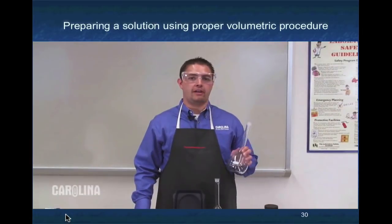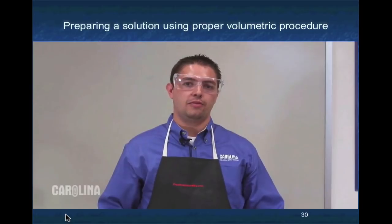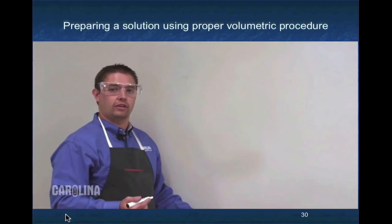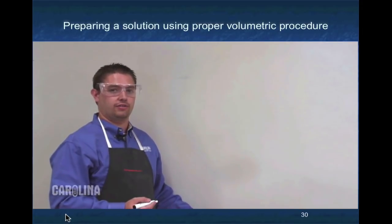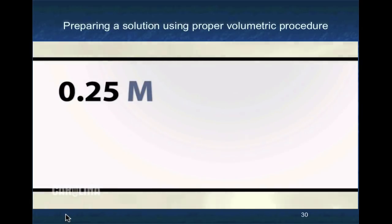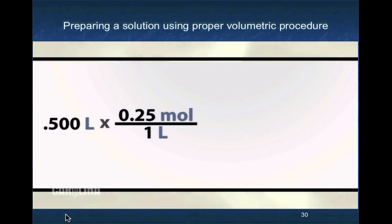Today, we will be preparing 500 milliliters of a 0.25 molar sodium chloride solution. Before beginning, it's important to map out your procedure for preparing this solution. We know that we want to prepare a 0.25 molar solution, which means that there is 0.25 moles per liter of solution. We also know that we only want 500 milliliters of this solution, or a half liter. If we multiply these two terms together, we can see that we will need 0.125 moles of sodium chloride.